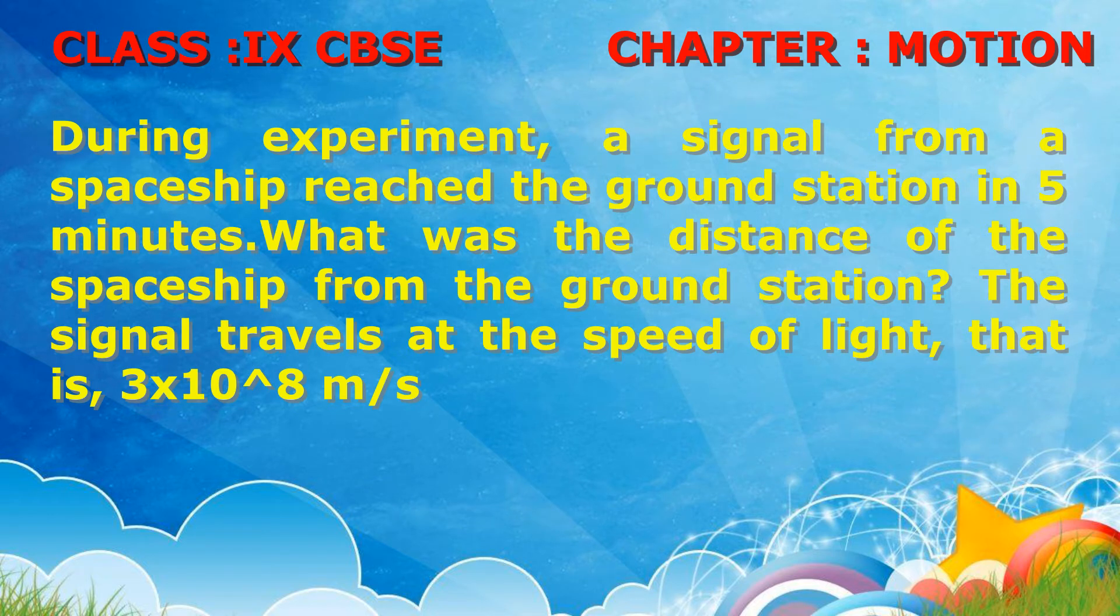9th CBSE science book, first lesson motion, back question 8: During an experiment, a signal from a spaceship reached the ground station in 5 minutes. What was the distance of the spaceship from the ground station? The signal travels at the speed of light, that is 3×10^8 meters per second.